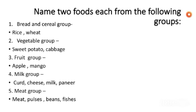Name two foods from each food group. Bread and cereal group: rice and wheat. Vegetable group and fruit group: you can write any example. Milk group and meat group: write the appropriate food items for each group.